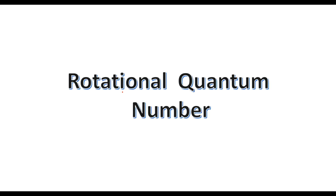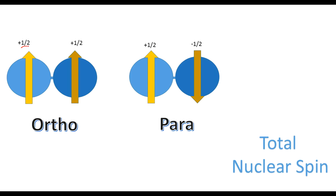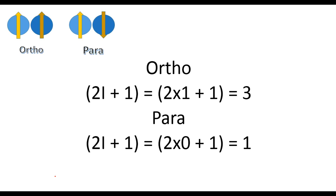Next, we need to find the rotational quantum numbers. First, we find the total nuclear spin by adding the two spins. For para hydrogen, +½ and −½ add up to zero, so the total nuclear spin is zero. For ortho hydrogen, the total nuclear spin is one.